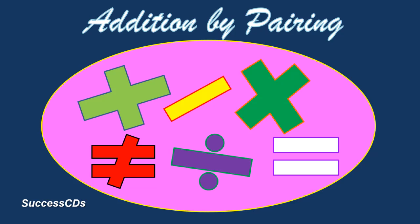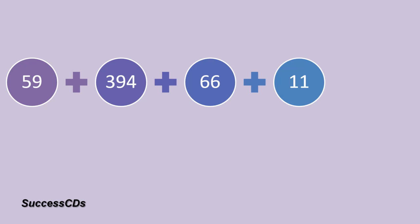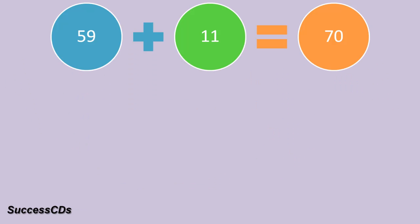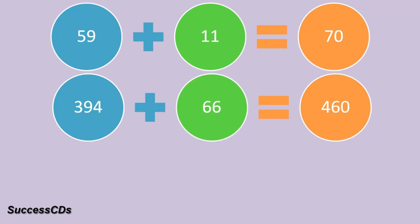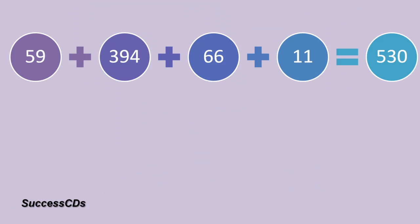Another method is addition by pairing. Here is an example: 59 plus 394 plus 66 plus 11. We have to find the answer. Here is a hint: make such pairs of numbers that they give 0 in the ones place. You can pair up 59 and 11, and another pair is 394 and 66. So 59 plus 11 gives you 70, and 394 plus 66 gives you 460. Then 460 plus 70 gives you 530. All these calculations you can do in your mind — the answer is 530.